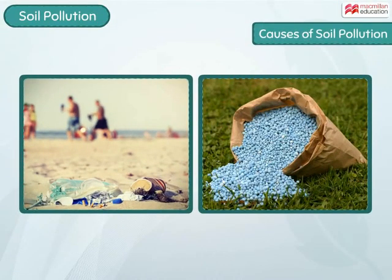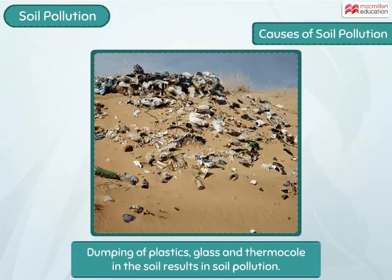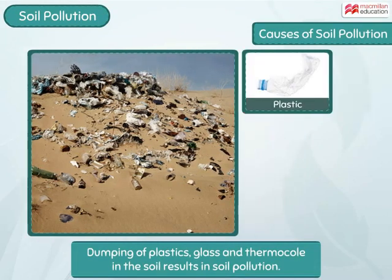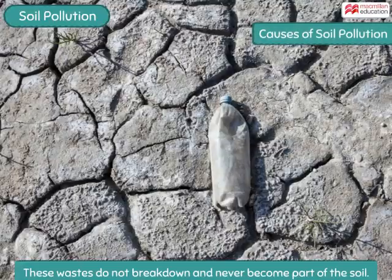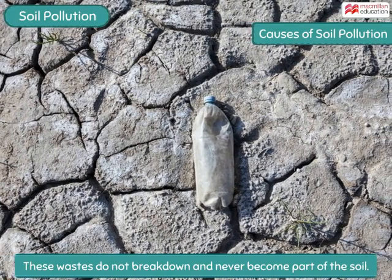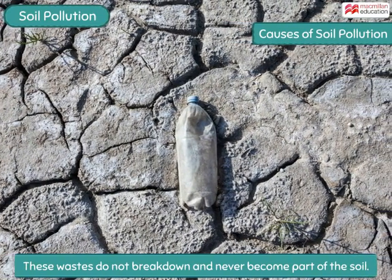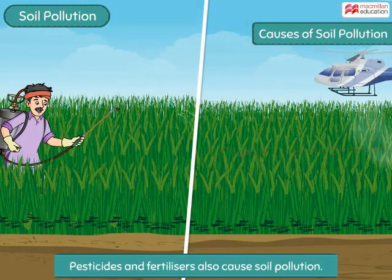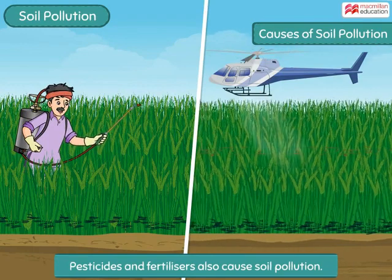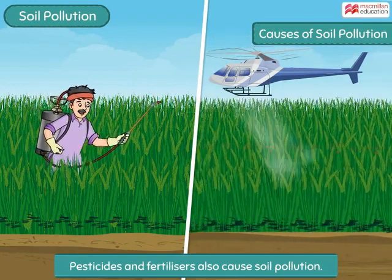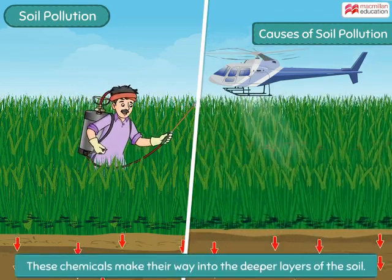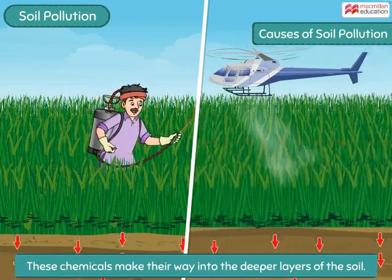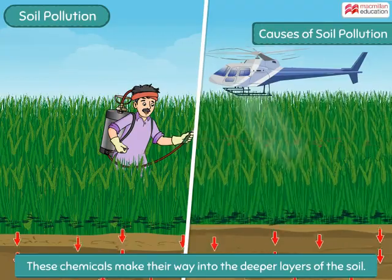Many human and natural activities result in soil pollution. Dumping of household waste like plastics, glass, and thermocol in the soil results in soil pollution. Such wastes do not break down and never become part of the soil. Similarly, chemical substances like pesticides and fertilizers that are used in agriculture to increase crop yield also pollute the soil. Such chemicals make their way into the deeper layers of the soil and affect the soil quality.